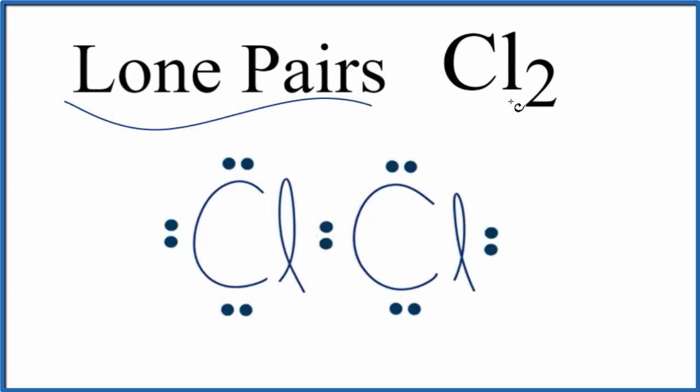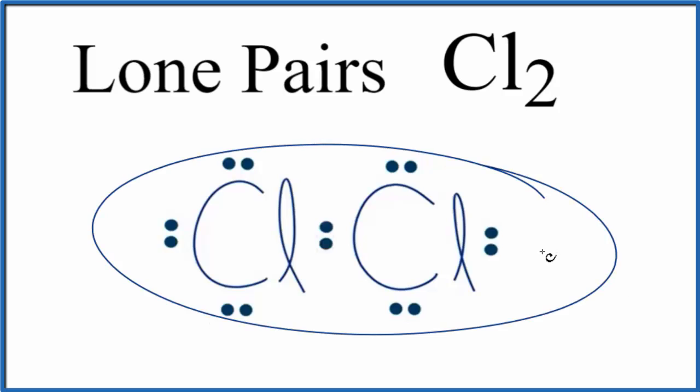Let's find the number of lone pairs for Cl2. This is diatomic chlorine. So the first thing we need to do to find the lone pairs for Cl2, we need a Lewis structure. If you need help drawing the Lewis structure for Cl2, there's a link in the description and at the end of this video.